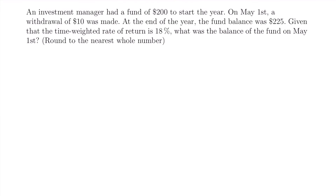Here's our final example. An investment manager had a fund of $200 to start the year. On May 1st, a withdrawal of $10 was made. At the end of the year, the fund balance was $225. Given that the time-weighted rate of return is 18%, what was the balance of the fund on May 1st, rounded to the nearest whole number? This is different because we are told the TWRR and are instead solving for the balance on May 1st.